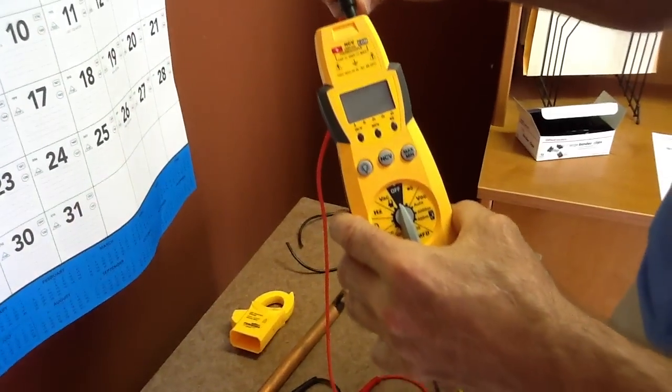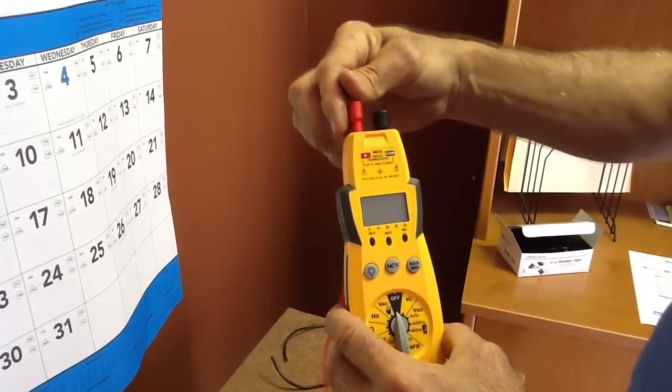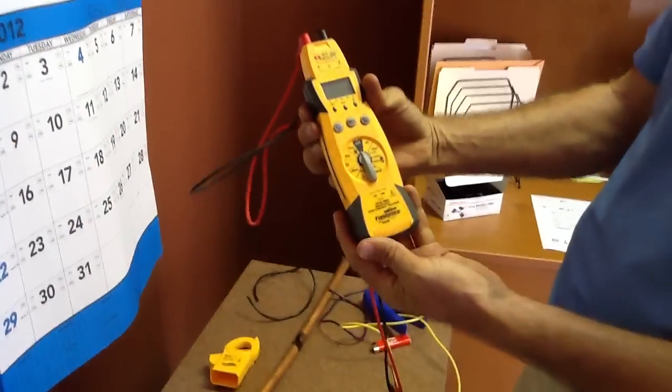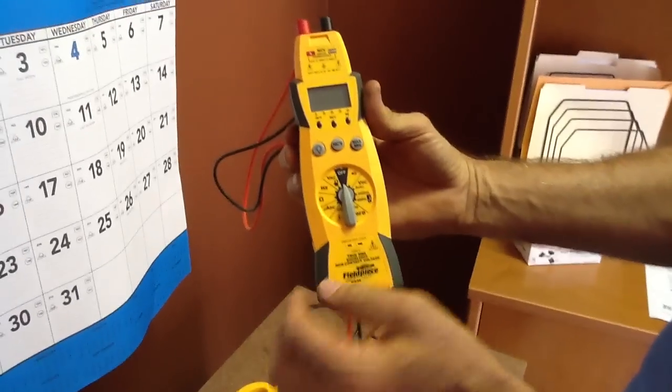When you pull it out of your bag, you're just going to take the black lead and put it in common, and take the red lead and put it into positive.